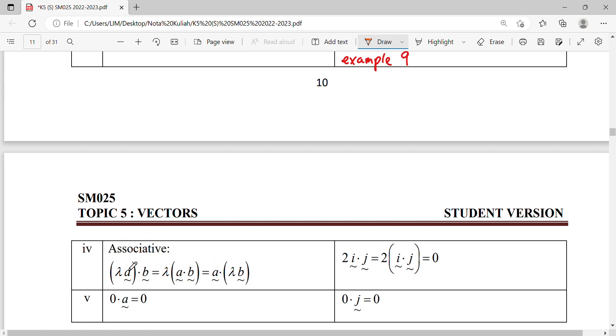Associative. Associative means that a constant multiplied with a vector dot a vector. So you can do A dot B directly, and then after that only you multiply with a scalar. Or this scalar can be multiplied to vector B, then after that only you dot with vector A. So associative law means about how you multiply your vector and your scalar.